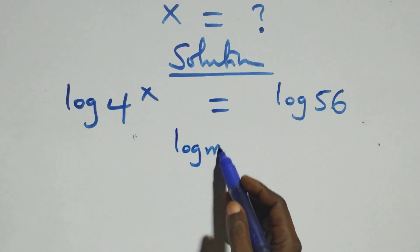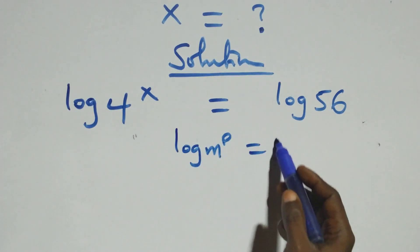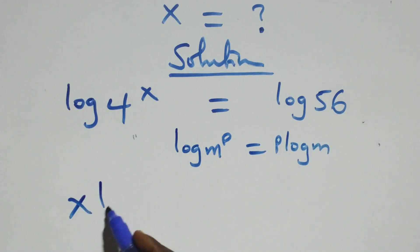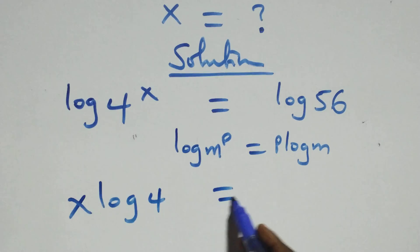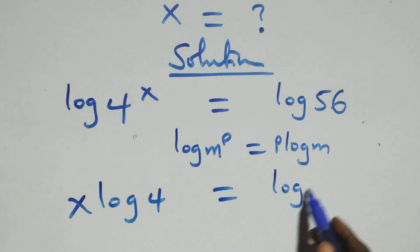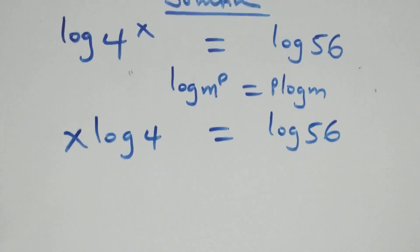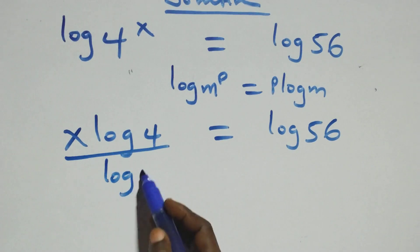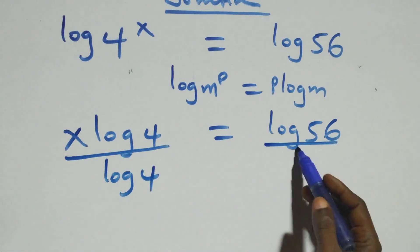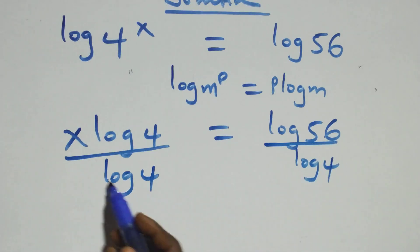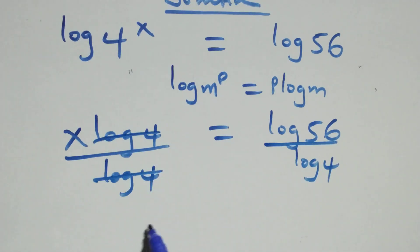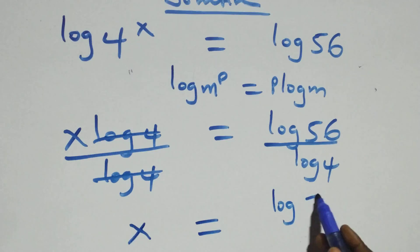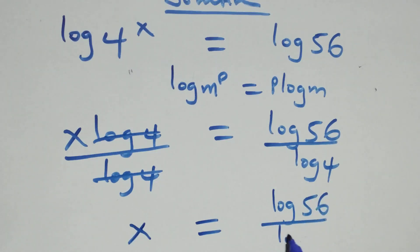When we have log n raised to power p, this is the same as p times log n. So here this becomes x times log 4 equals log 56. Then we divide both sides by log 4, and log 4 cancels, giving us x equals log 56 over log 4.